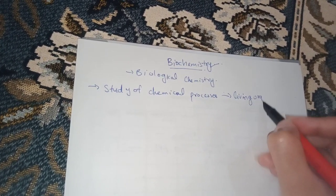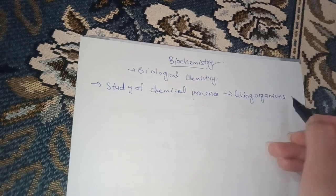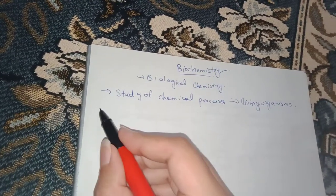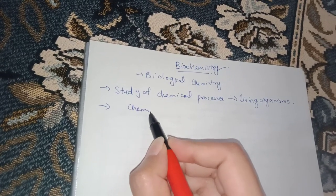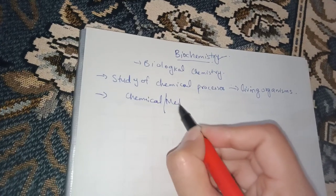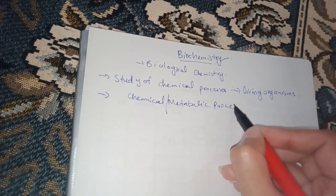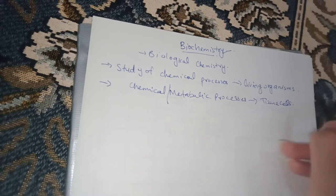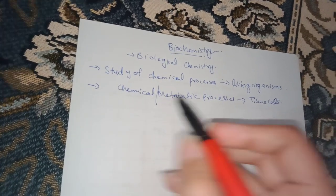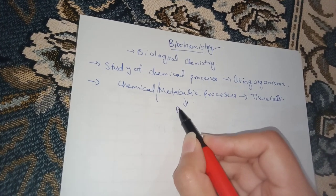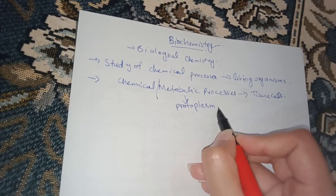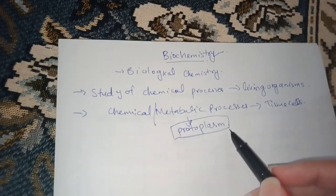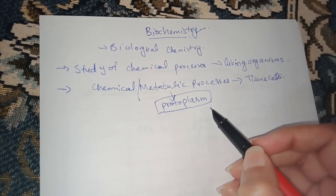Chemical processes taking place within living organisms are referred to as biochemistry. Biochemistry deals with the chemical or metabolic processes which take place in the tissue cells. These metabolic reactions take place in the material called protoplasm, which is the basis of all forms of life.